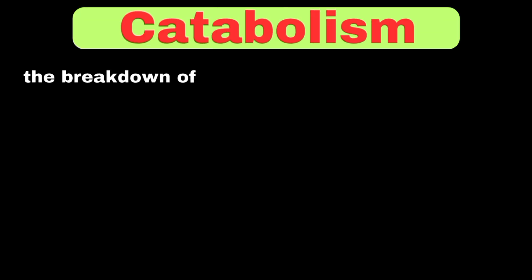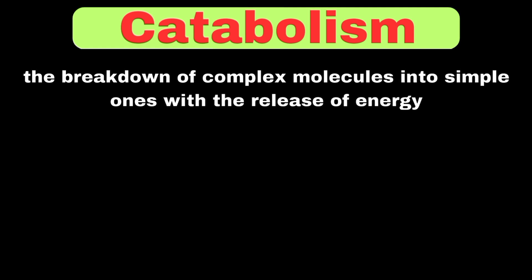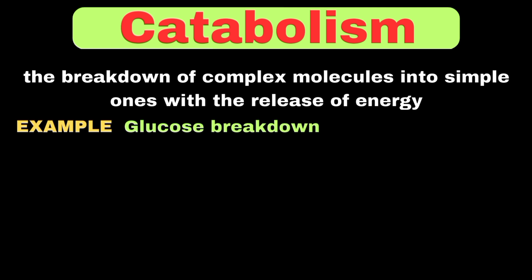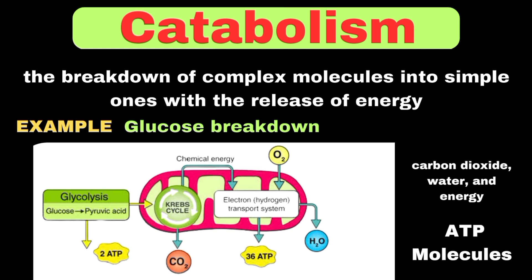Catabolism can be defined as the breakdown of complex molecules into simple ones with the release of energy. For example, when one glucose molecule is broken down through cellular respiration, it produces carbon dioxide, water, and energy in the form of ATP molecules. Since this process breaks down glucose into simple molecules and releases energy, it's a perfect example of a catabolic process.